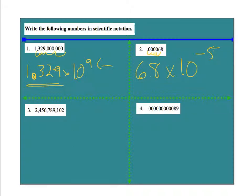Now down here with number 3, things get a little crazy because even though I move it over 3, 6, 9 spots, my coefficient's going to be ridiculously long. So it's actually going to be 2.456789102 times 10 to the 9th place.